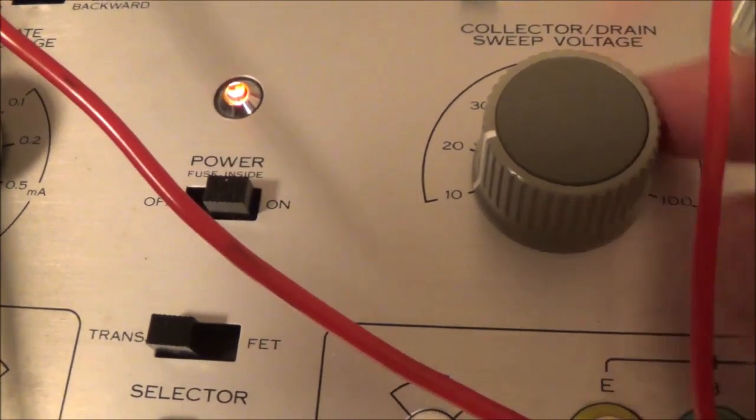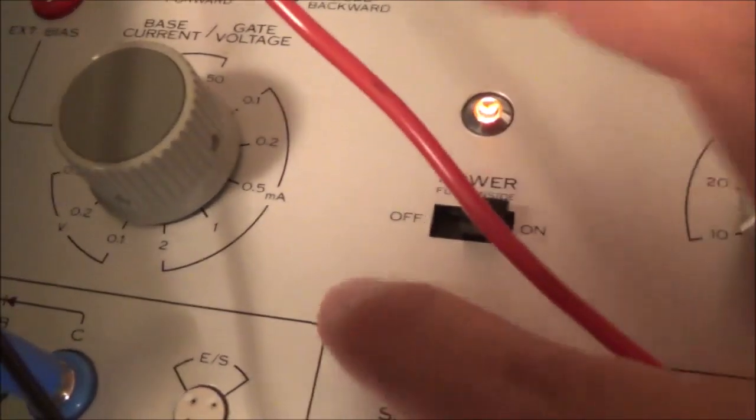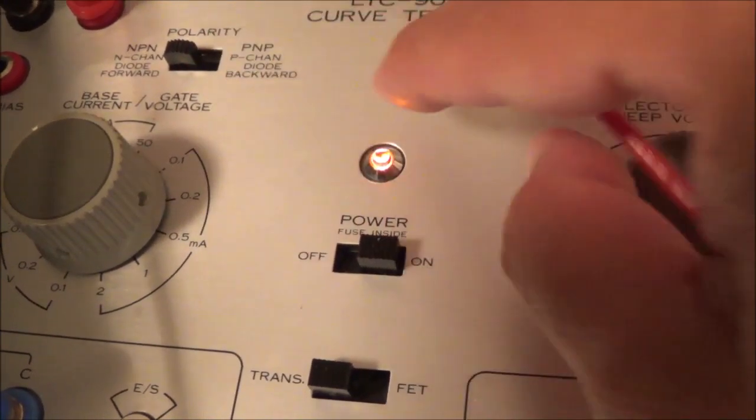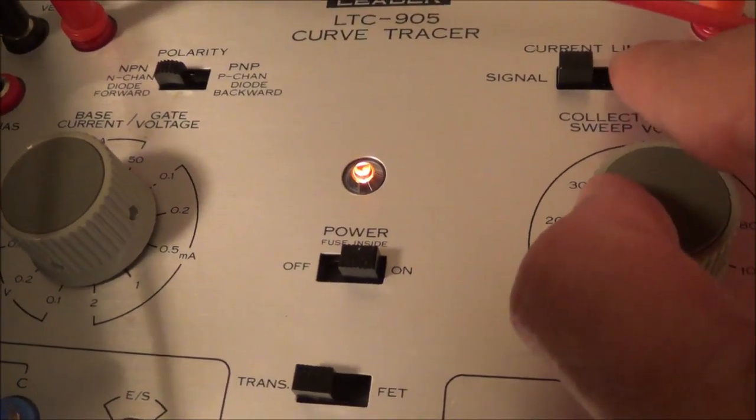You can be seen I'm on 10 volts that's the lowest and over here too my base current is 10 microamperes and of course this is all self-explanatory. If it's an NPN transistor you put in the NPN position if it's a signal transistor limit the current.